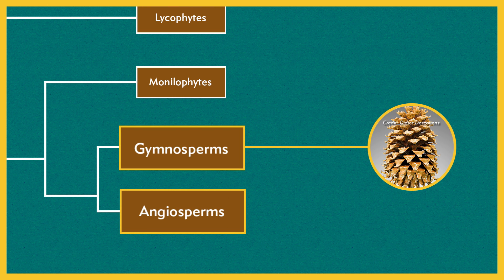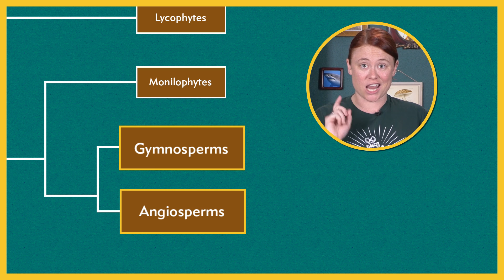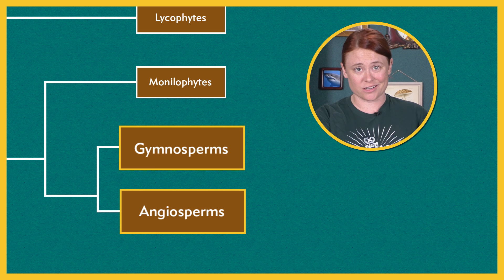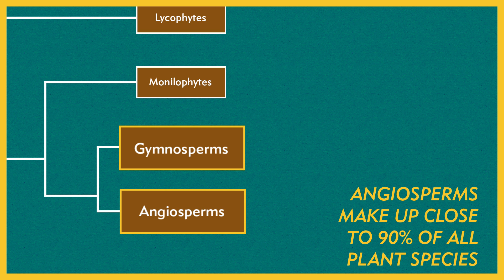Gymnosperms have seeds that are not enclosed in chambers. In fact, the prefix gymnos means naked — so yep, naked sperm it is. Angiosperms have seeds that develop inside of chambers, and these chambers typically come from flowers. So angiosperms are also referred to as flowering plants, and they make up close to 90% of all plant species.